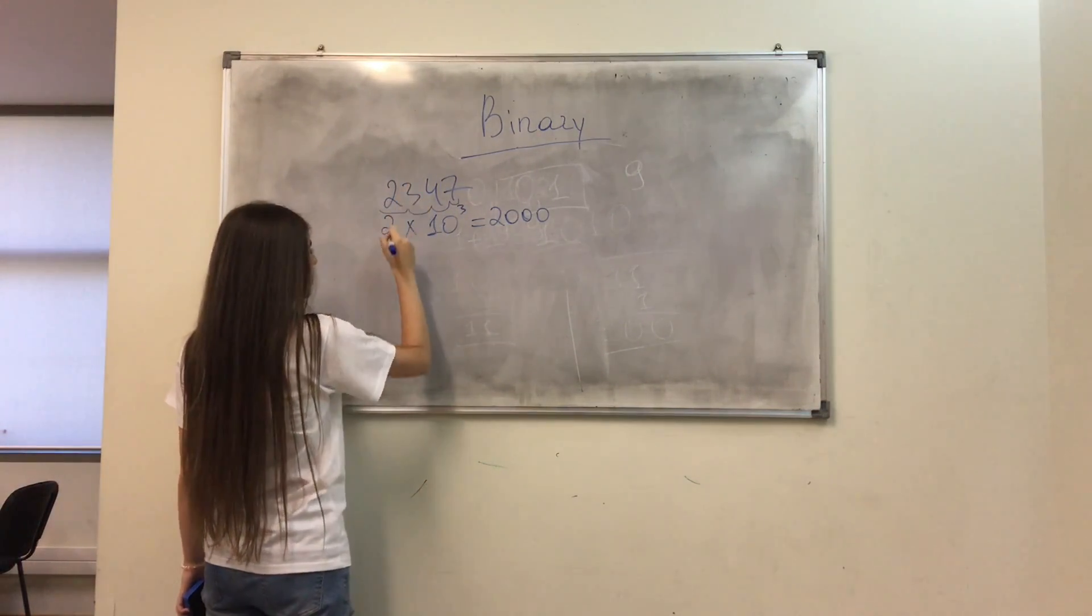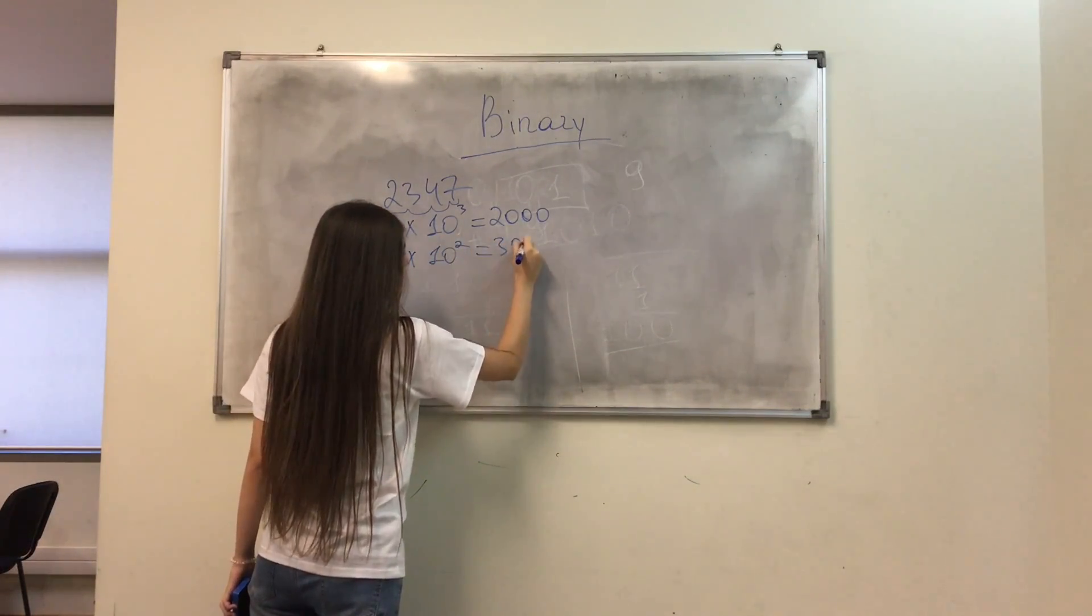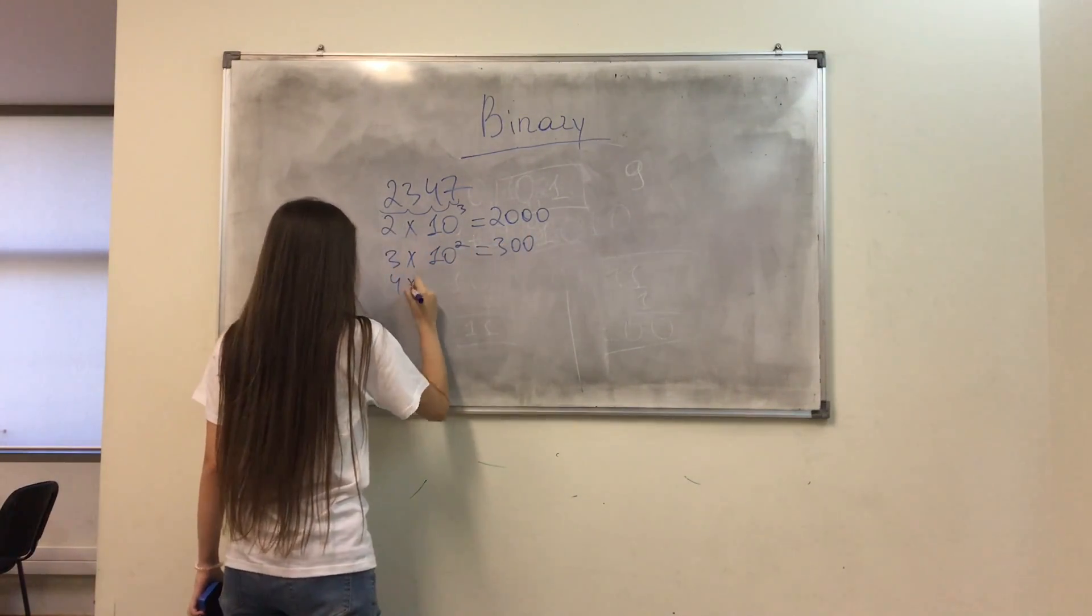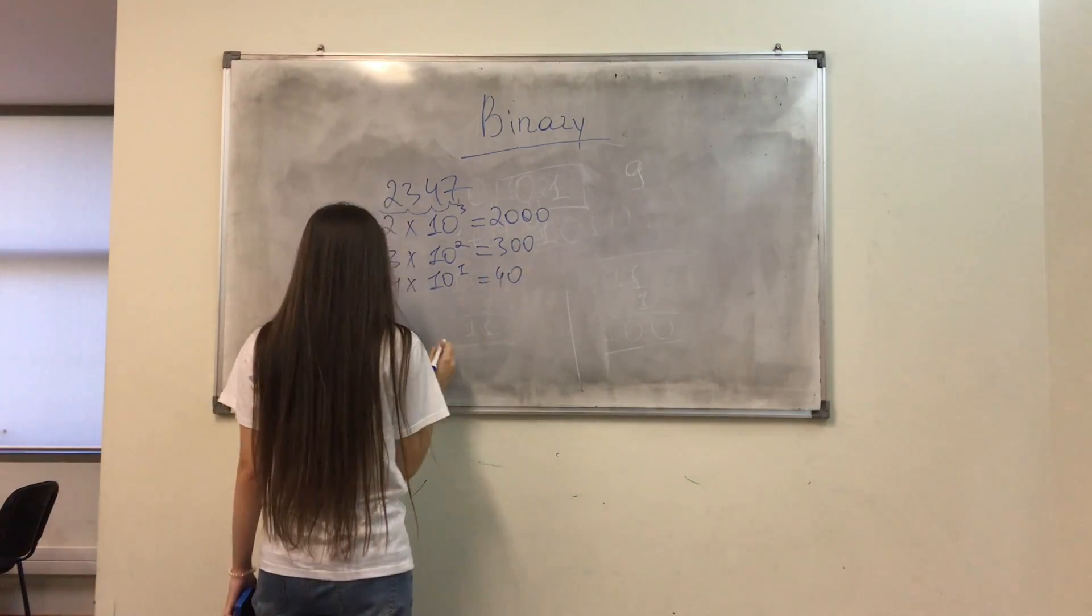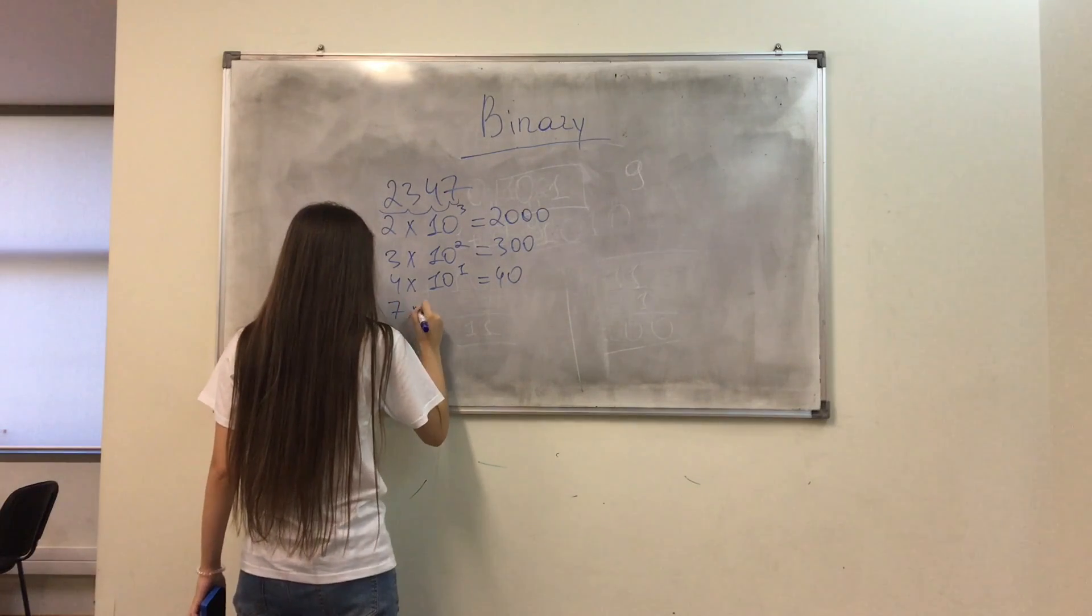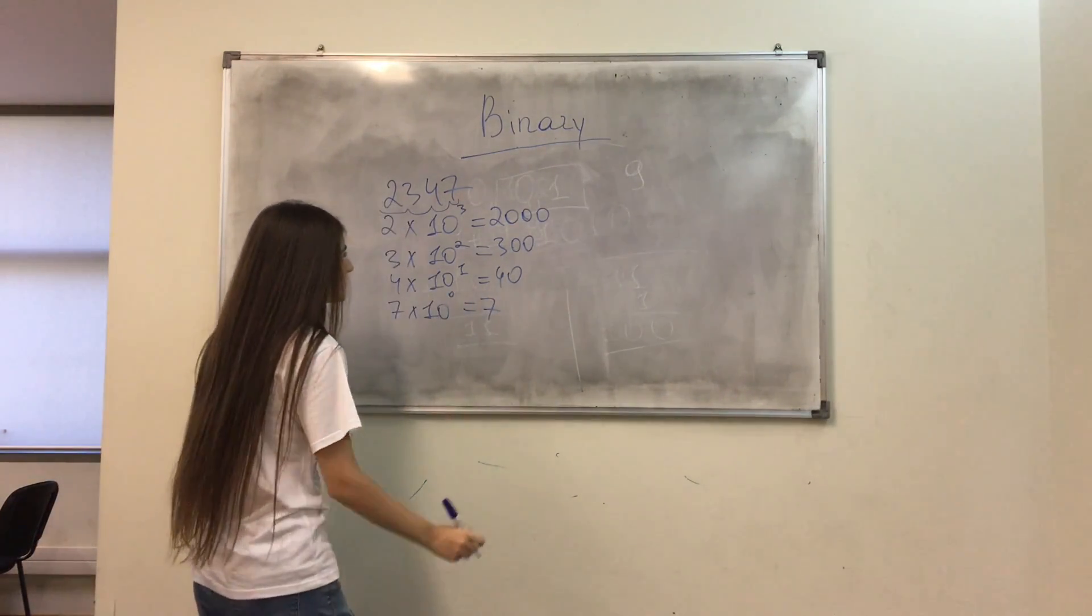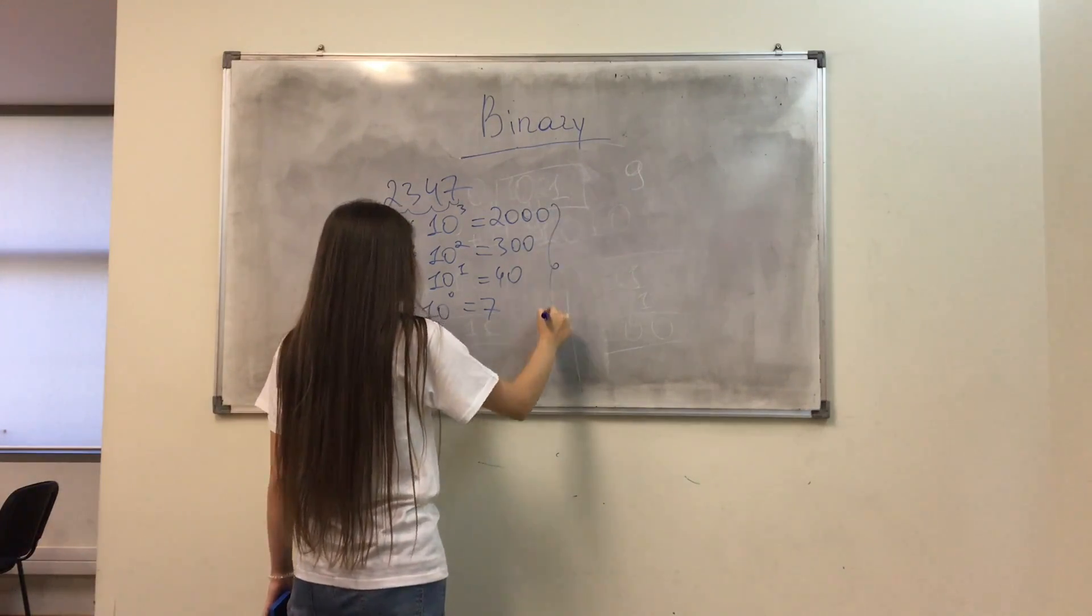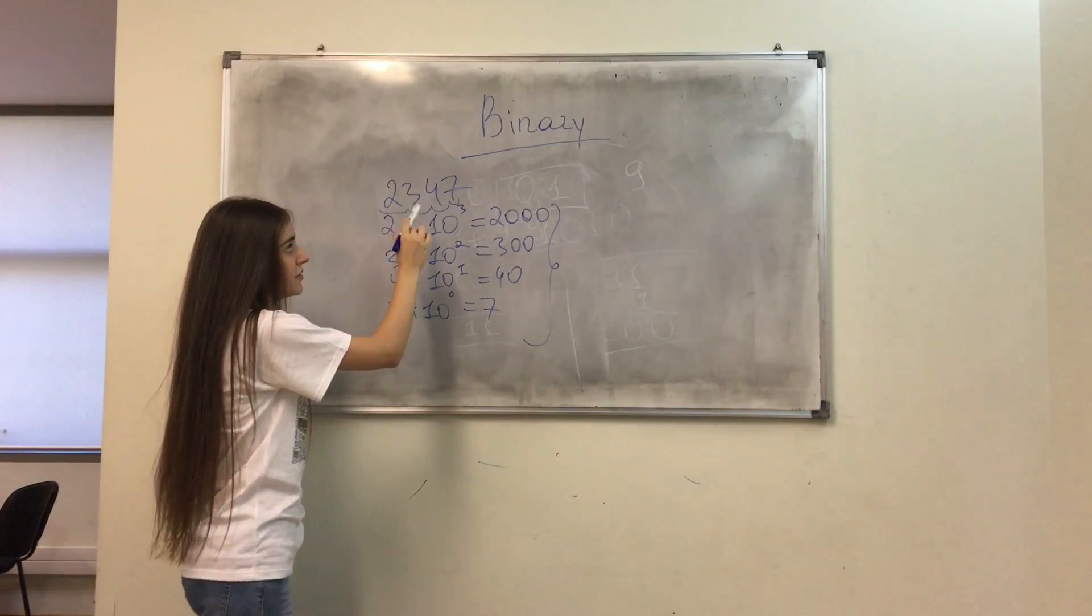Let's continue. 3 times 10 power of 2, I get 300. 4 times 10 power of 1, I get 40. 7 times 10 power of 0, I get 7. So adding all these numbers together, I get 2347.